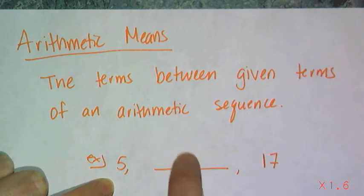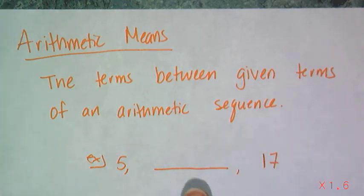Well those numbers in between there are arithmetic means. And if I just ask for one arithmetic mean, then that's the old school mean from mean, median, and mode.